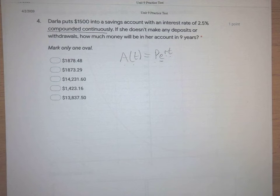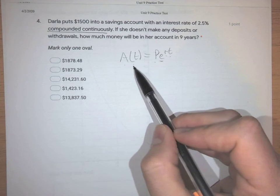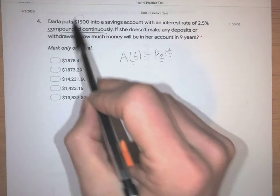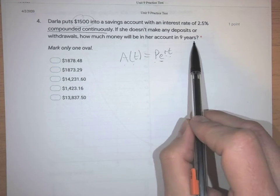Also, we're trying to figure out, are we given the initial amount, or are we given the final amount, or what are we trying to find. So Darla puts $1,500 into a savings account. This looks like the amount that she puts in, and we want to find out how much money will be in her account in nine years.